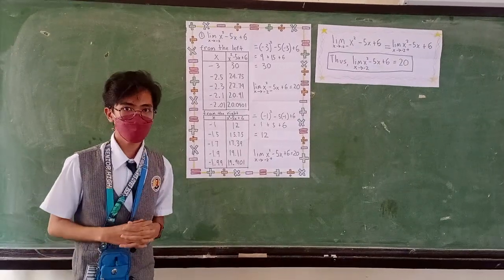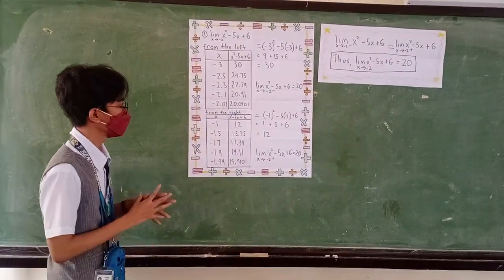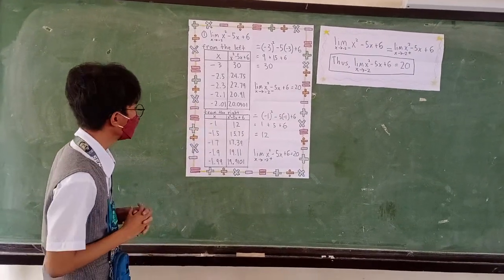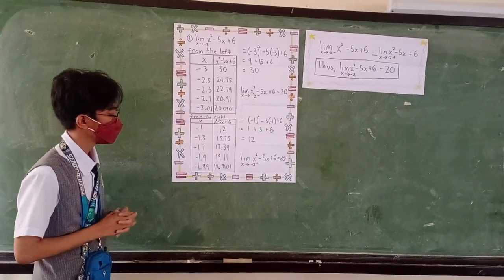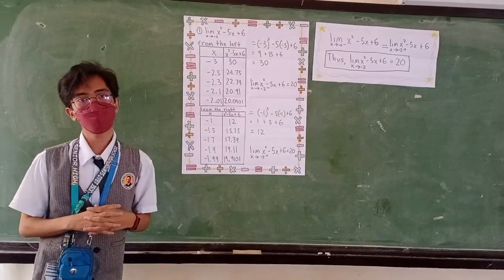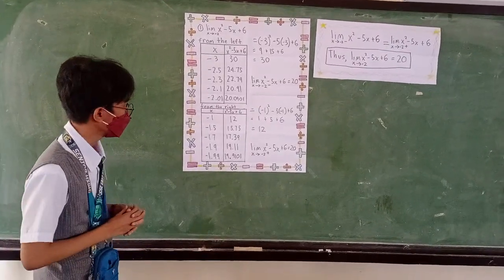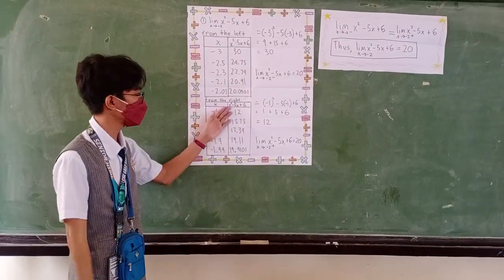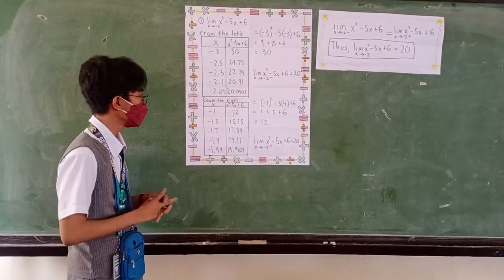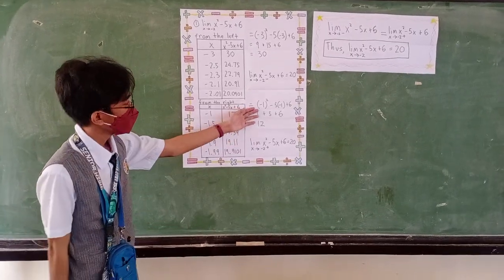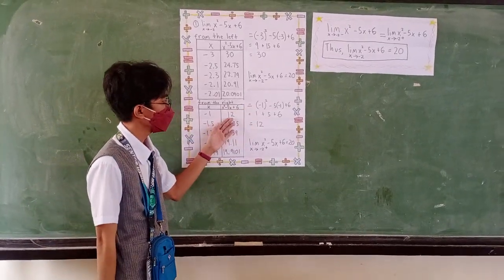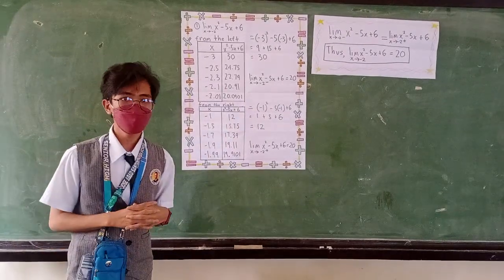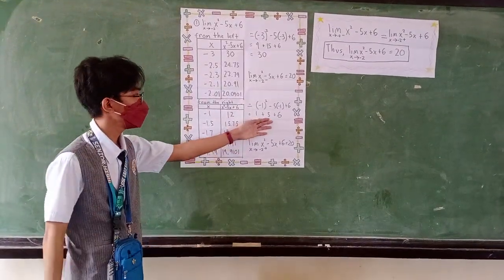We also need to do the same thing from the right side. These are the chosen values of x: negative 1, negative 1.5, negative 1.7. We need to substitute the value of x for the function x squared minus 5x plus 6. So we substitute negative 1 into the function. The answer would be positive 2. Negative 1 squared equals 1, negative 5 times negative 1 equals 5, plus 6. The answer would be positive 2.